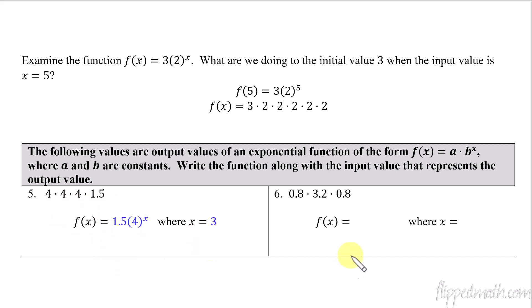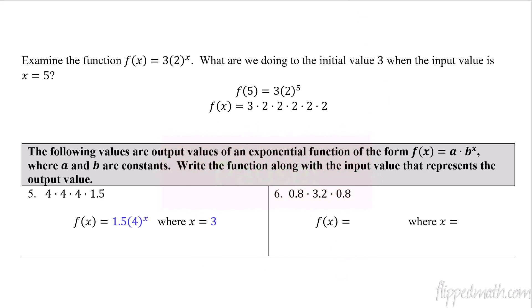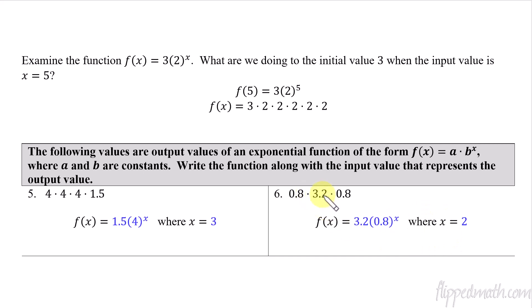Pause the video and do number six. The answer is 3.2 times 0.8 raised to the x. The base is 0.8 because 0.8 is what was repeating — multiplied two times in this case. So this is how we represent this as an exponential function: 3.2 · 0.8^x.